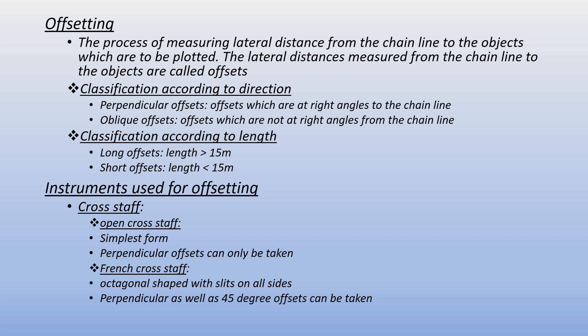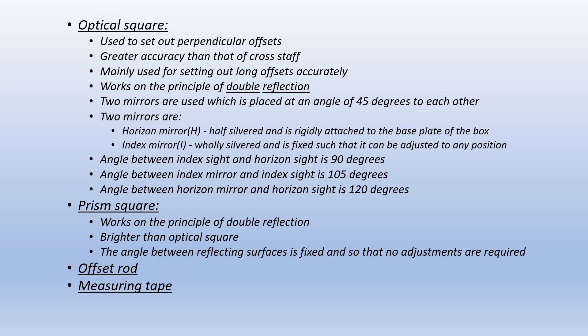Instruments for setting out offsets include cross staff (open cross staff and French cross staff, the simplest form). The optical square is used to set out perpendicular offsets with greater accuracy than the cross staff, mainly used for setting out long offsets. It works on the principle of double reflection.